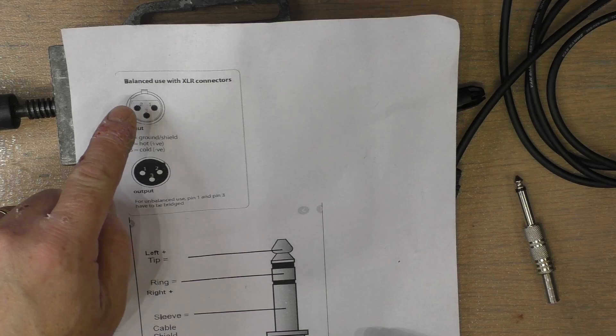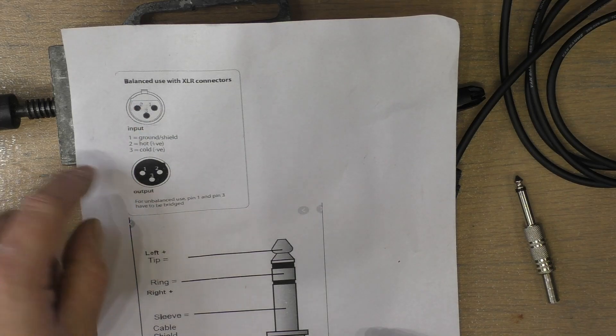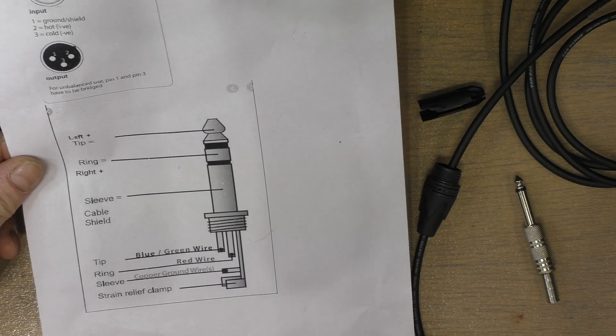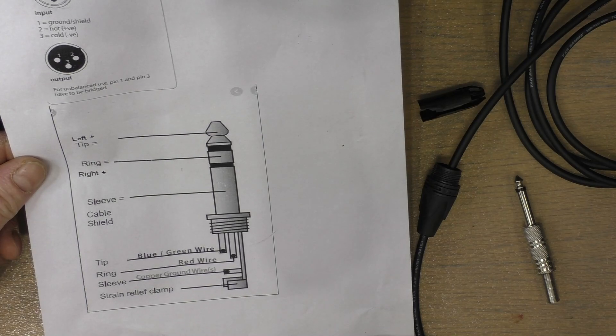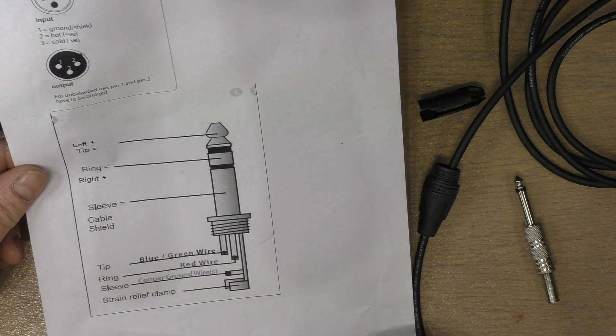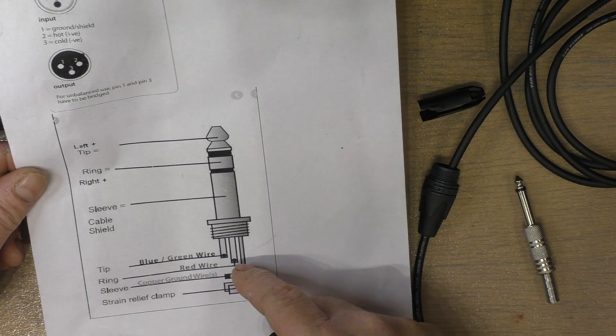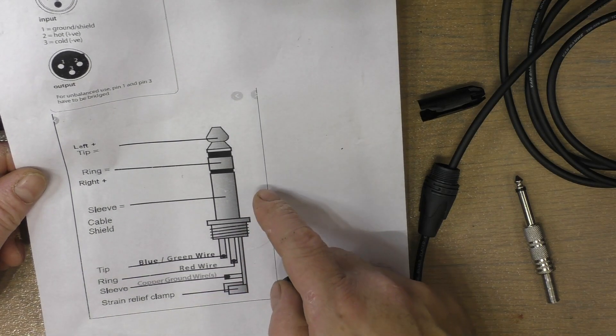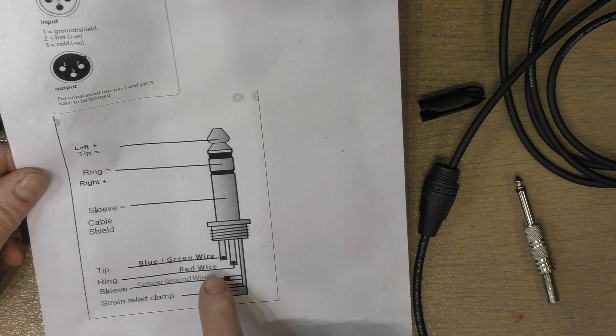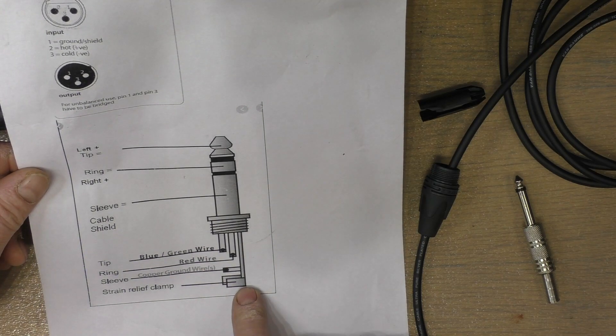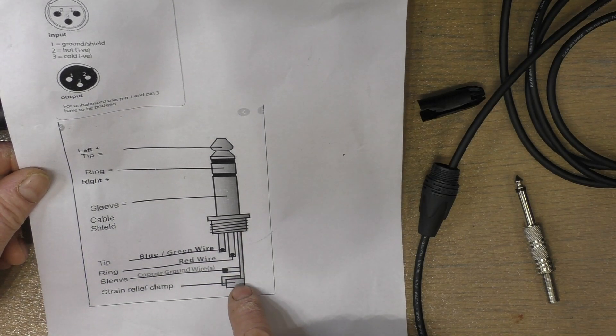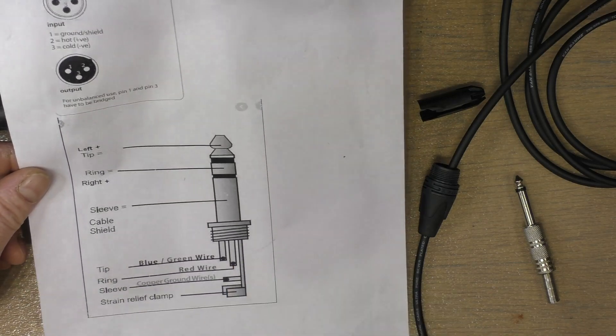I have a little diagram here which shows the story. This is a female, this is a male, and this is your tip ring sleeve. Now the only difference with the tip ring sleeve is you have a second connector. On a tip sleeve you just have the one which is the tip, and the sleeve is the cable clamp and this little piece of metal here.